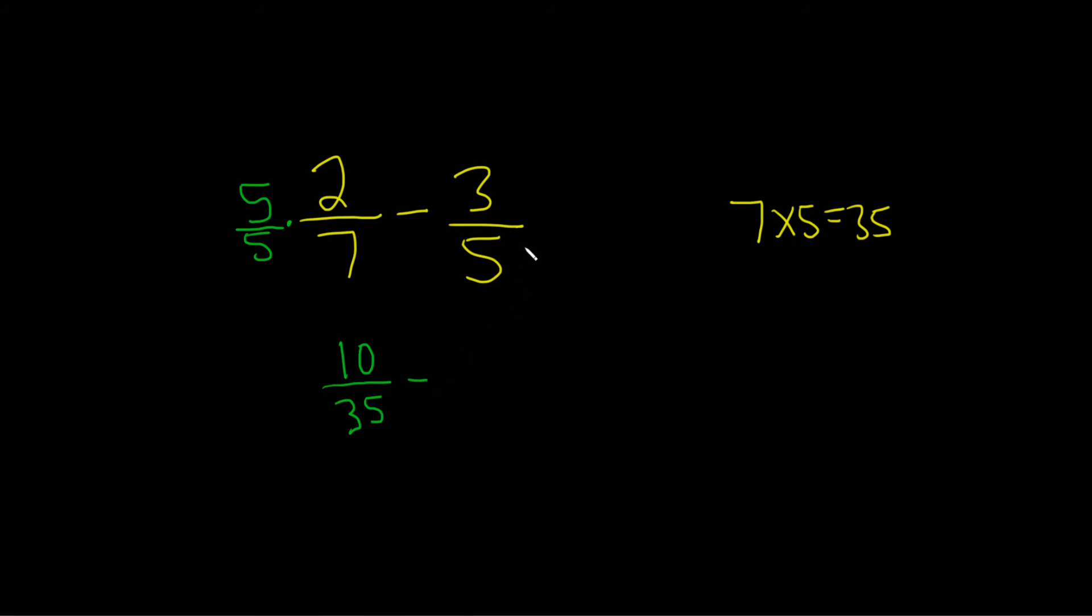We write down the minus. Then do the same thing here. Here we're trying to get to 35 and we're missing 7, so you multiply by 7 over 7.